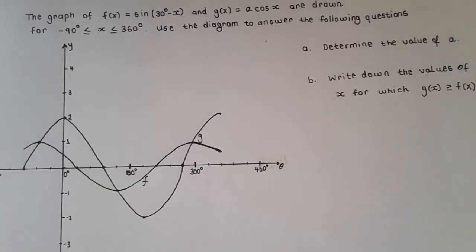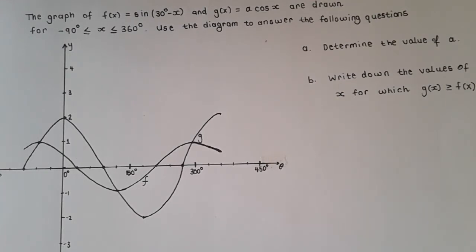Welcome back, Metricolins. This is now the last example for graph interpretation — example number four. We can't leave out the trig functions, so we are also going to have graph interpretation being tested in trigonometry.